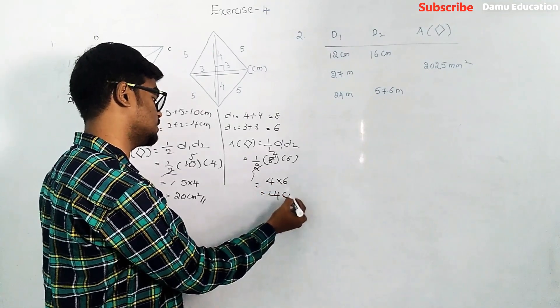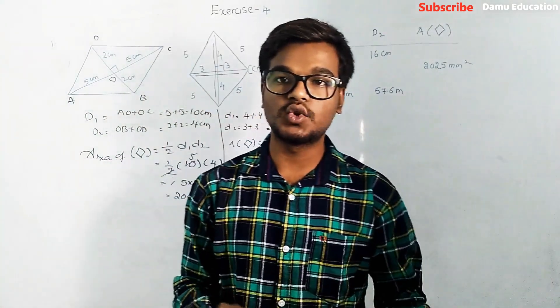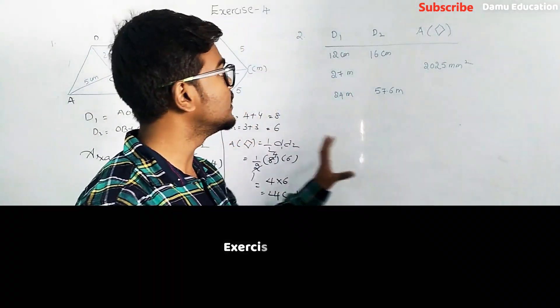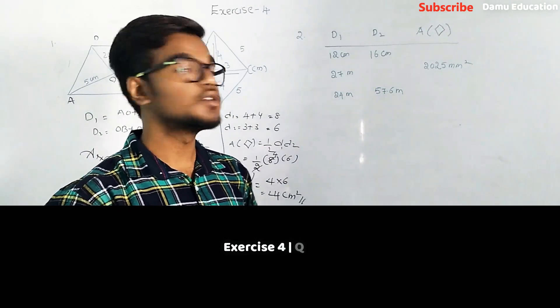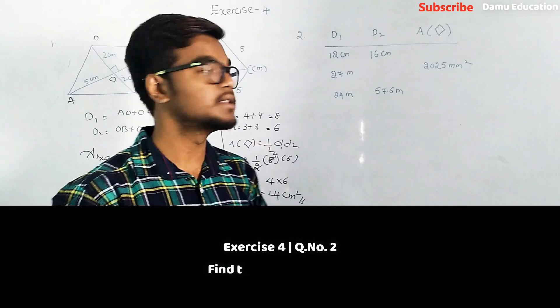Next question - they asked us to fill the missing values here. So they are given d2 and d1 and area of rhombus.